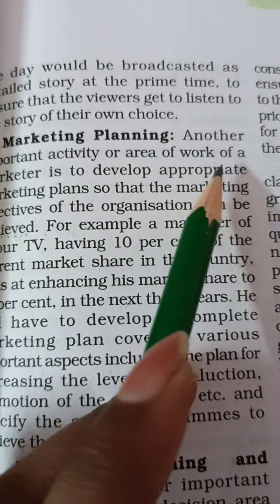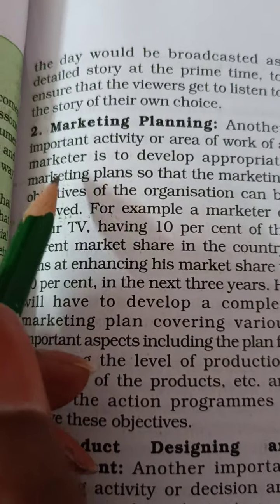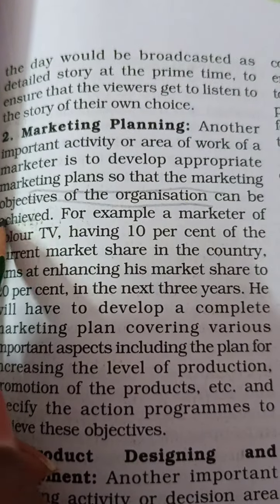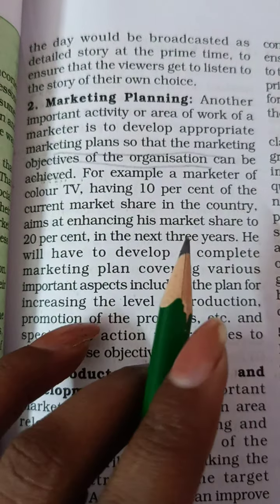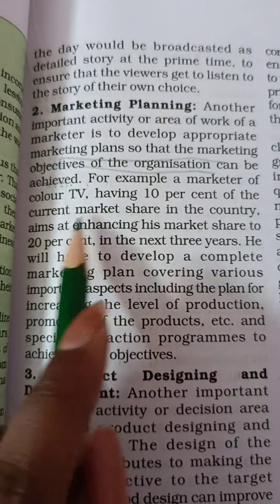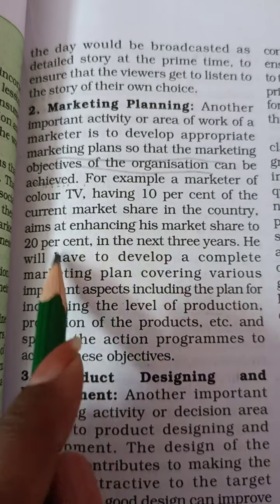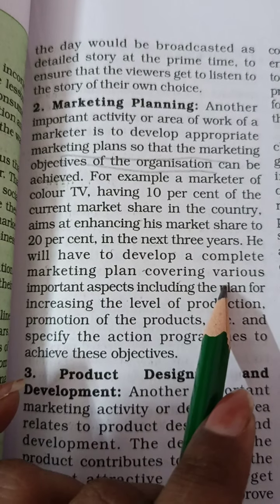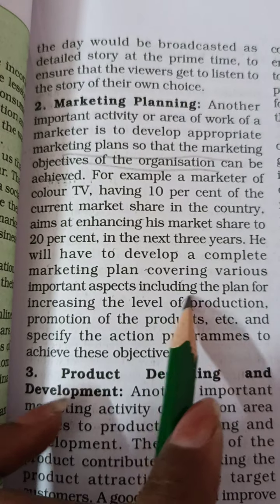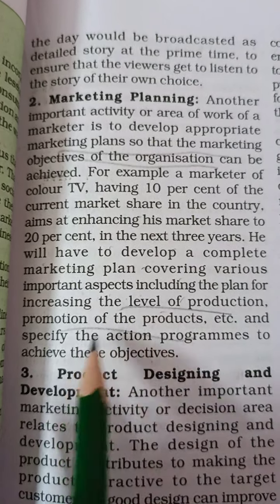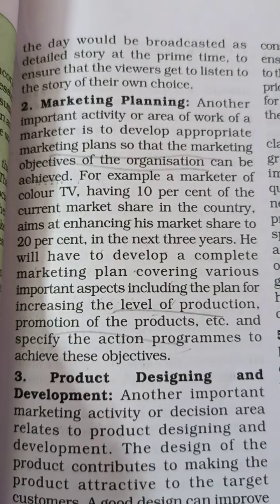Next is marketing planning. Another important activity or area of work for a marketer is to develop appropriate marketing plans so that the marketing objectives of the organization can be achieved. For example, a marketer of Color TV having 10% of the current market share in the country aims at enhancing his market share to 20% in the next three years. He will have to develop a complete marketing plan covering various important aspects, including the plan for increasing the level of production, promotion of the product, and specifying the action program to achieve these objectives.